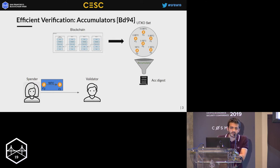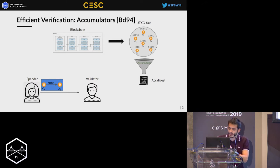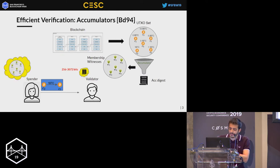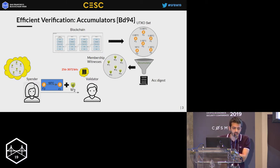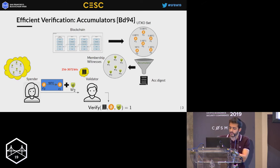Cryptographic accumulators are primitives that allow you to take a set, compress it to a small single digest, in a way that you can also create membership witnesses for each element of the set. So now the validator, instead of storing the whole UTXO set, just keeps track of the very small accumulation digest. The spender is responsible for creating the membership witness of the coin and sending it together with the transaction.